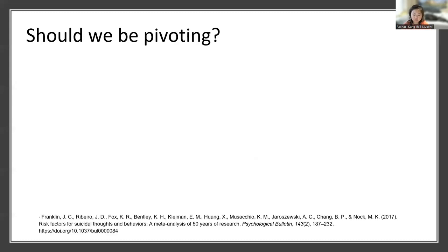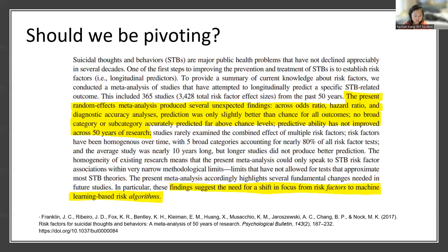However, in a recent meta-analysis conducted by Franklin and colleagues, published in 2017, there were presented some concerning findings about these suicide risk factors that we have come to know, which brought up the question: should we be pivoting from these risk factors? Namely, the results from that meta-analysis indicated that these known risk factors of suicide may have a predictive accuracy of no better than chance.